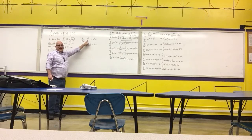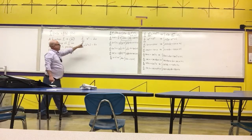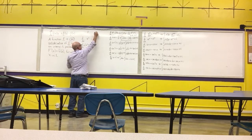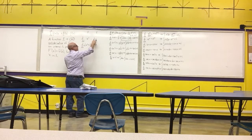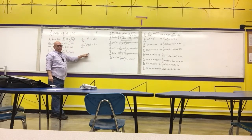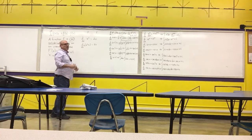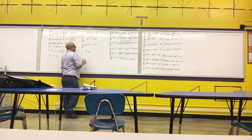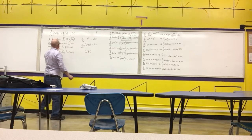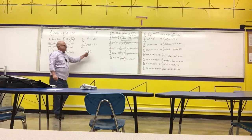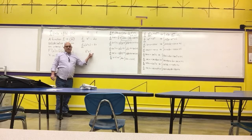So if little f is 2x, big F could have been x squared, or x squared plus 1, or x squared plus pi, or x squared plus any constant. When we work backwards with antiderivatives, we need to remember that there is going to be the possibility of a constant tacked on the end.